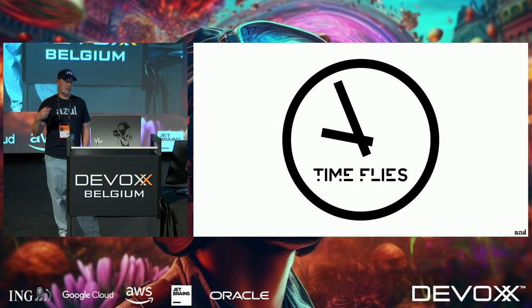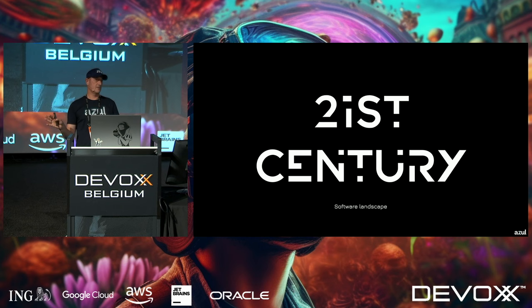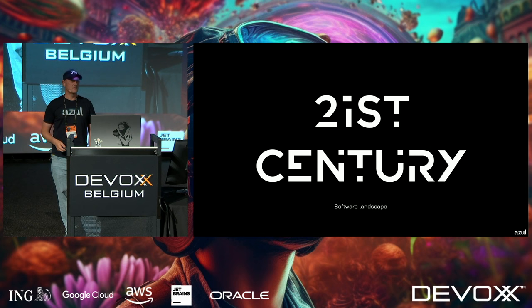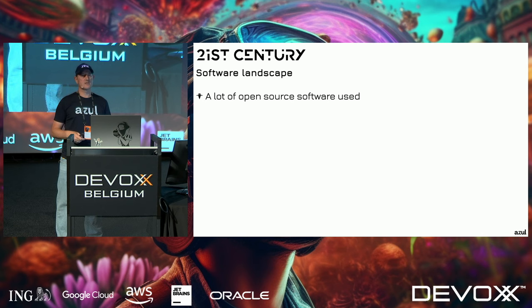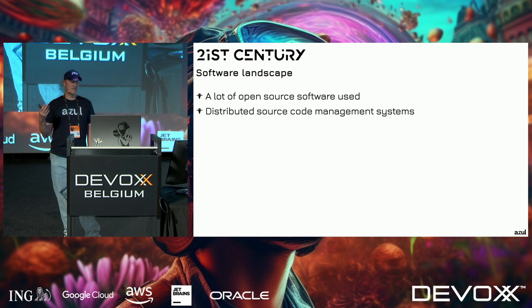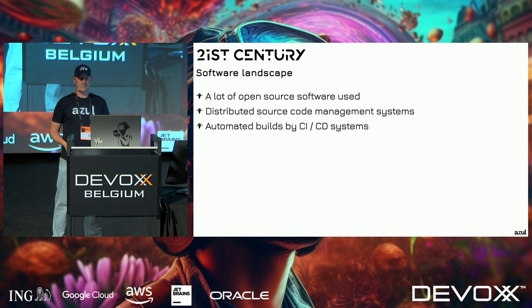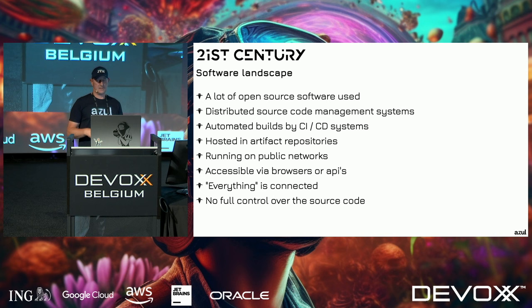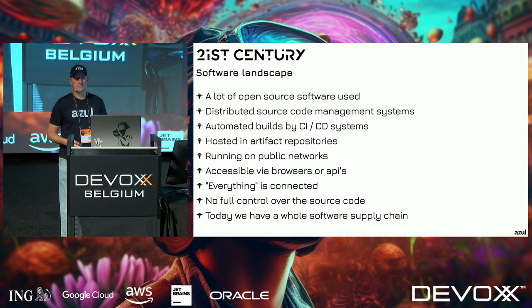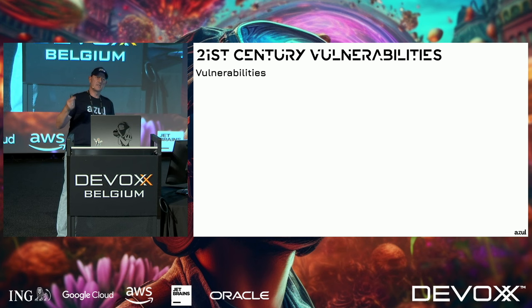Time flies and we're in the 21st century. Today, a lot of stuff is open source, we have distributed source code management with automated CI/CD systems, we host artifacts in repositories, run on public networks, have browser-accessible APIs, and everything is connected. We no longer have full control over the source code — we just trust stuff.